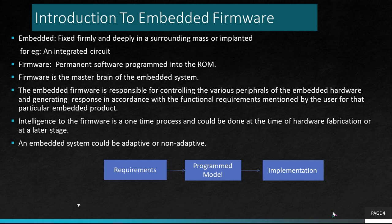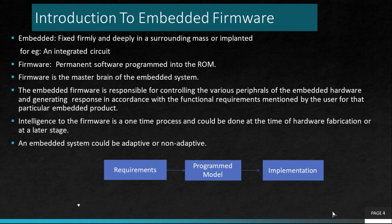Firmware. A permanent software that is programmed into the ROM is called firmware — a set of programs. This firmware is the master brain of the embedded system, similar to the CPU which is considered the master brain of the computer system. This embedded firmware is responsible for controlling the various peripherals of the embedded hardware, and it generates responses according to the requirements specified by the end user. Thus, the firmware is considered the foundation or master brain of the embedded system.